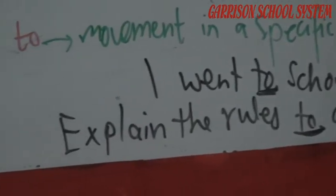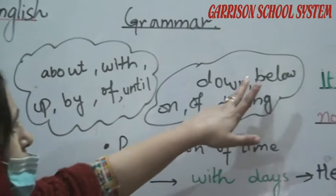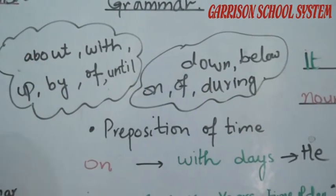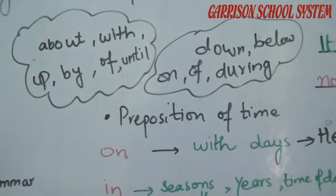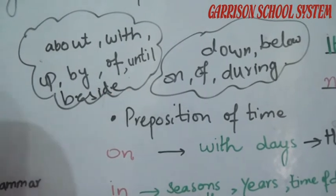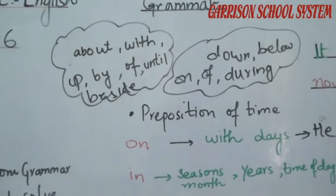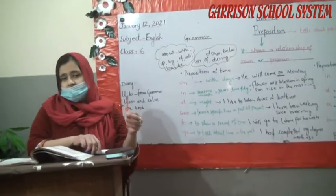So these are the prepositions of time and prepositions of direction from your book. Besides all these, there are additional prepositions: about, with, up, by, off, under, down, below, on, off, during — we also use all of these. Additionally: beside, upside, downside — these are also prepositions. We use 'by' as well.